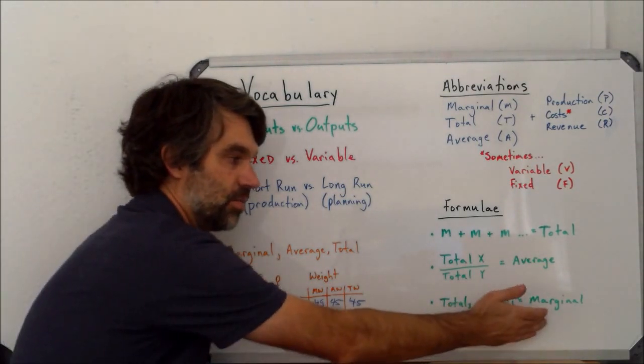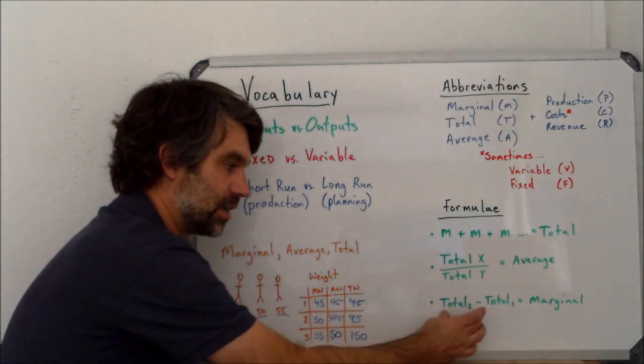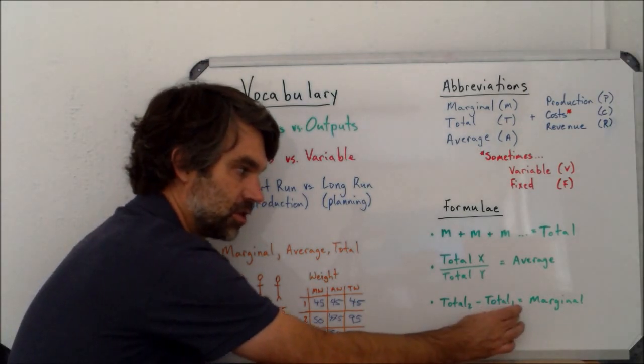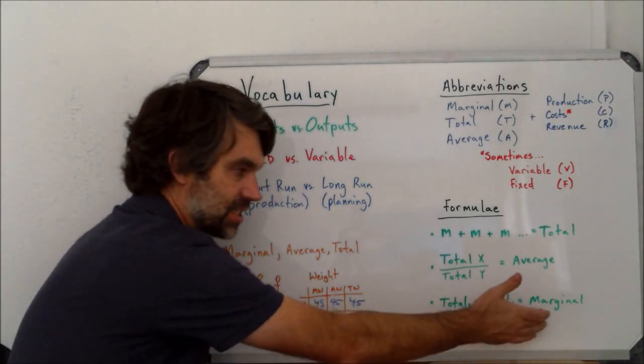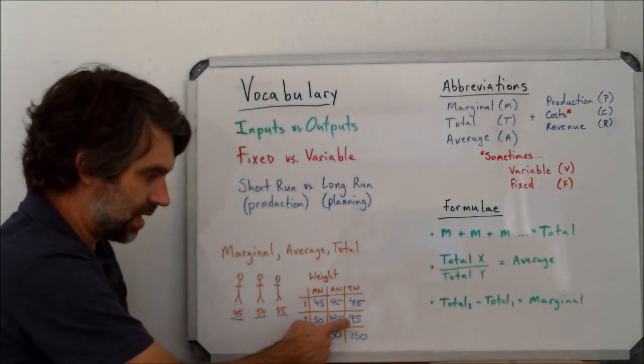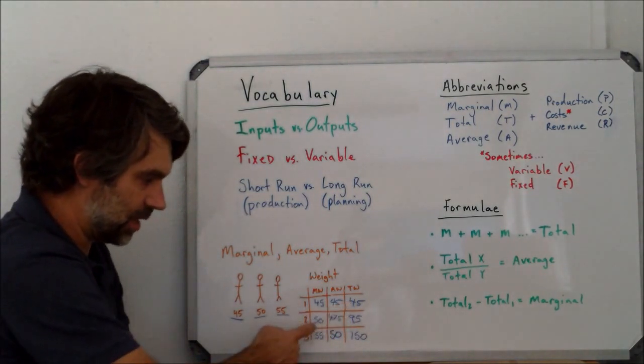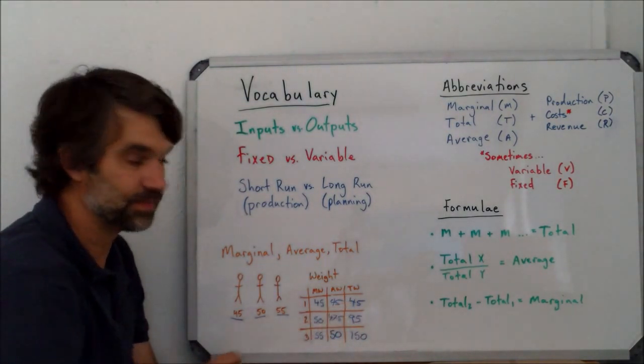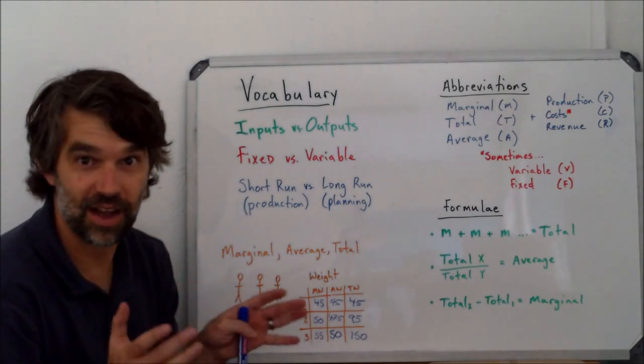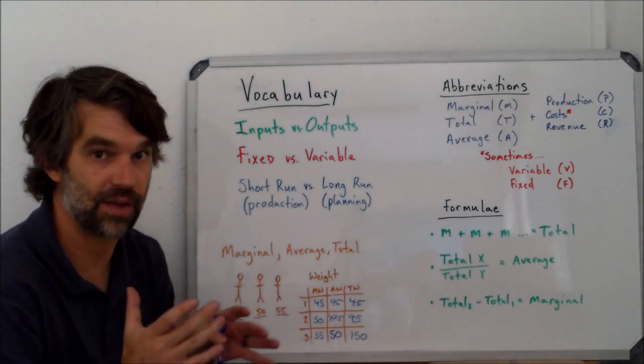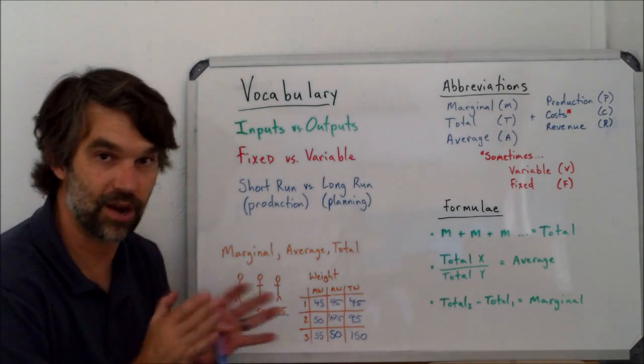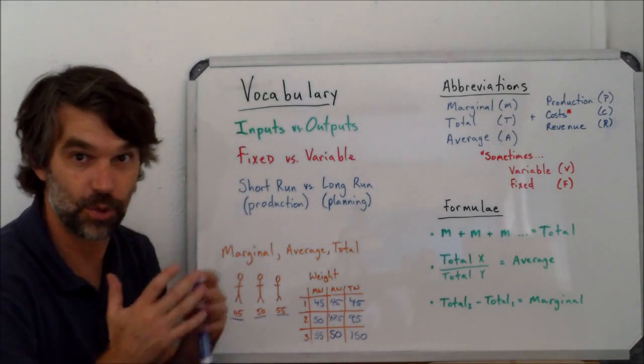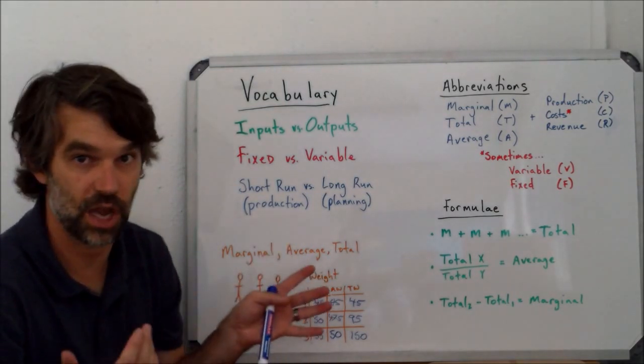Finally, if we're trying to get to a marginal number, we need to take the second total minus the first total, and that's going to be our change to equal the marginal. So 95 minus 45 equals 50. If you get stuck on any of this, come right back to this video and have a quick check-in. It's imperative that you not get stuck, otherwise you won't even be able to understand the concepts we're talking about.